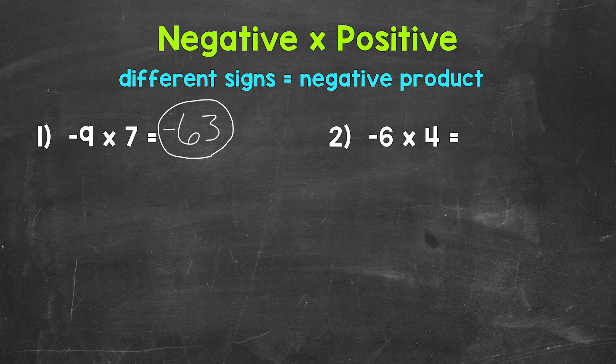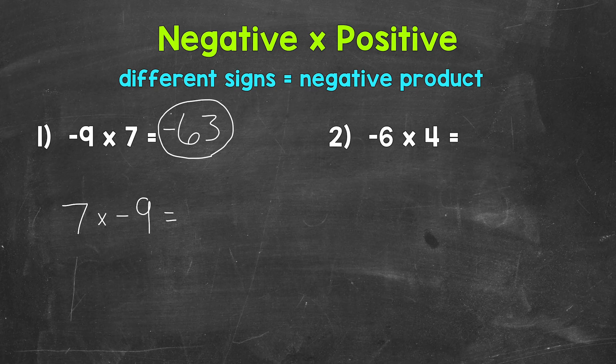So we can also think of this as 7 times negative 9. So 7 groups of negative 9. Negative 9 plus negative 9 plus negative 9, 7 times. That gets us to negative 63 as well.